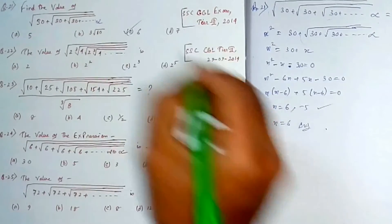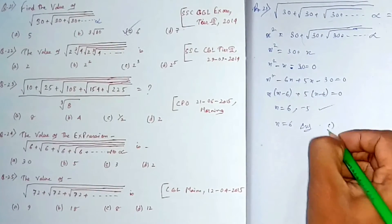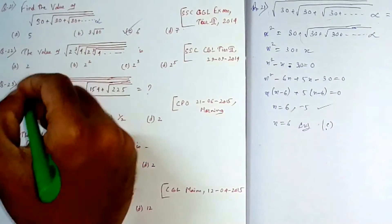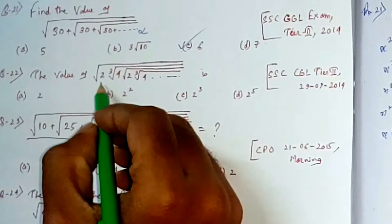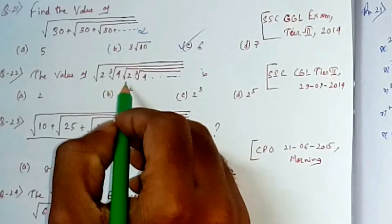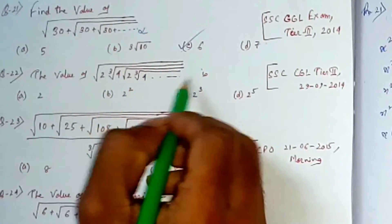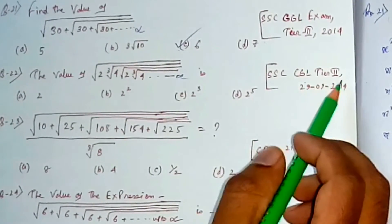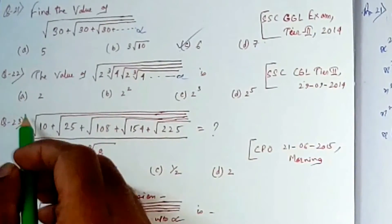So the answer is option C, which is 6. Now let's move forward to the next problem. Question 22: find the value of √(2·∛4·√(2·∛4·...)) going to infinity. This question came in SSC CGL Tier 2, 2014.